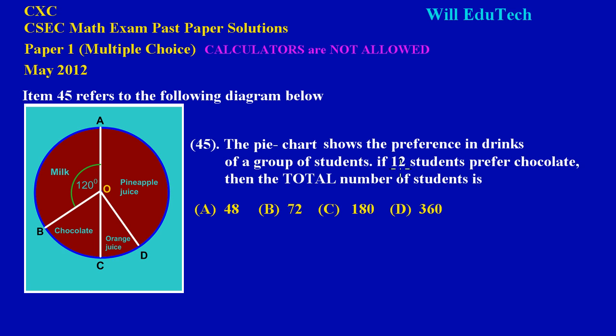First, they gave us some critical information that 12 students prefer chocolate. So we have a total of 12 students. Now what we need to do first is find the sector angle that represents chocolate. Since they gave us the amount of students who prefer chocolate, then we need to find the sector angle that represents chocolate. And if you notice, this angle here would be the angle that we're speaking about.